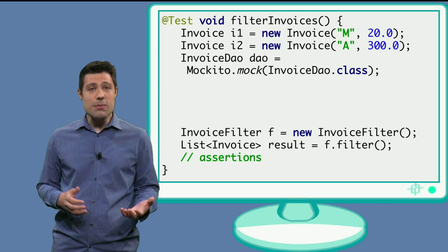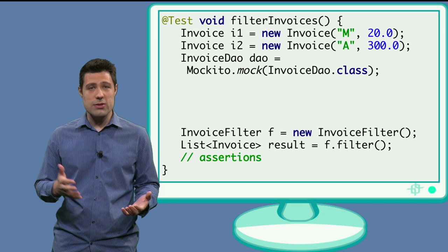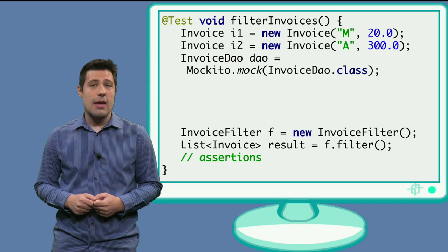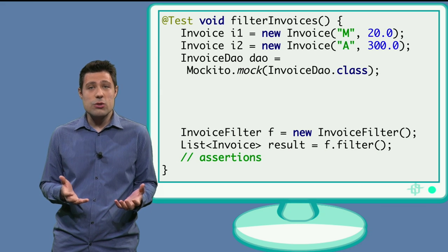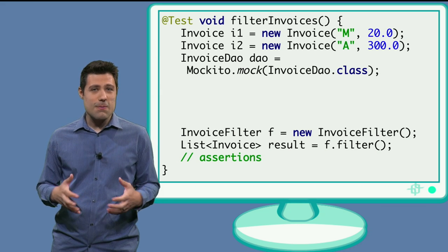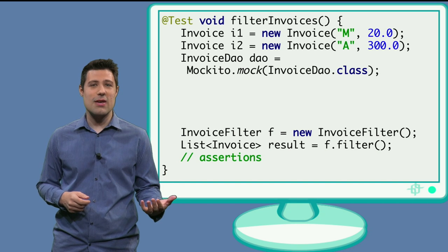Mockito returns the same type of the class, in this case invoice data access object. And this is very useful for us, because it means we don't have to change our code that much. Because the mocked class has the same interface as the real class.